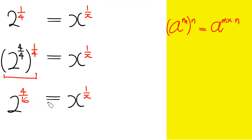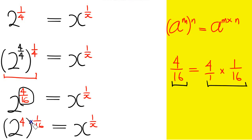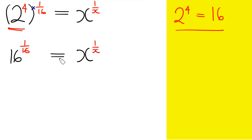Multiplying those powers, we get 2 raised by the power of 4 over 16 equals x raised by the power of 1 over x. Now, 4 over 16 can be split so that we have 2 raised by the power of 4, multiplied by 1 over 16, equals x raised by the power of 1 over x. We know that 2 raised by the power of 4 is 16, so this becomes 16 raised by the power of 1 over 16 equals x raised by the power of 1 over x. Therefore x equals 16.